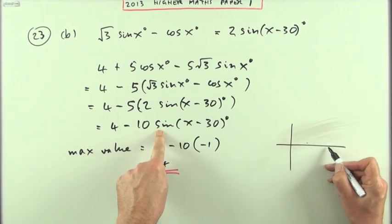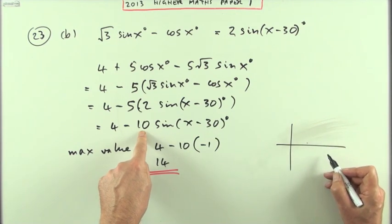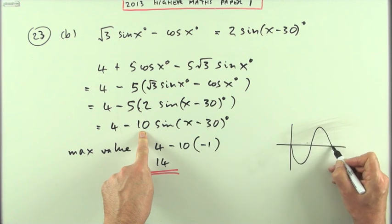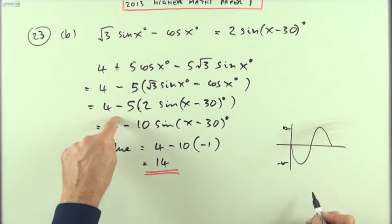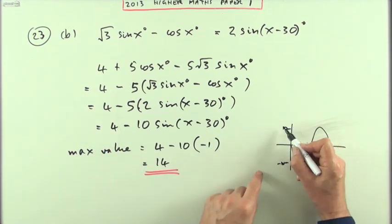You've got a sine which should look like this, but it's negative 10 sine, so it's upside down with an amplitude of 10. It would have been going down 10 and then up 10.